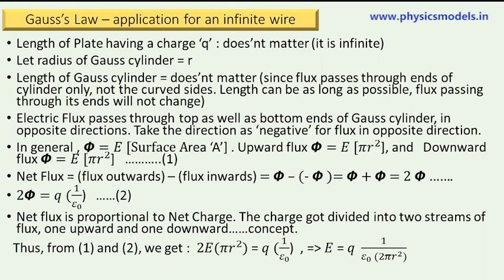We will now derive the equation for the electric field. The length of the plate is infinite so we let that go. We chose a Gaussian cylinder of radius r. The length of our Gaussian cylinder could be anything — it doesn't matter — because the flux is only passing through the top and bottom faces. Even if we make it very long, the amount of flux passing through our Gaussian cylinder is not going to change.